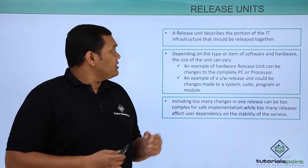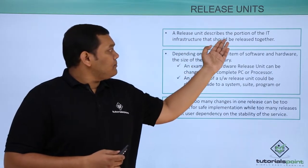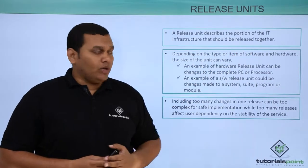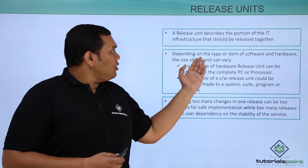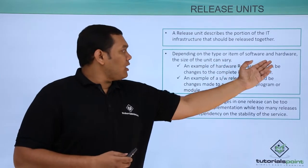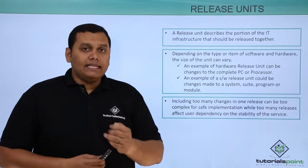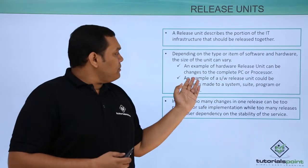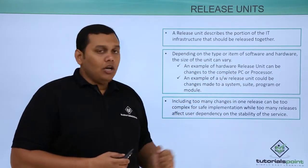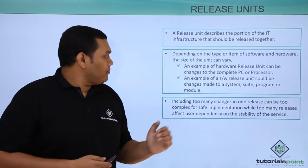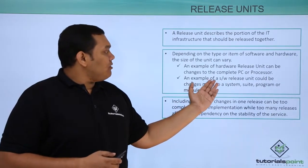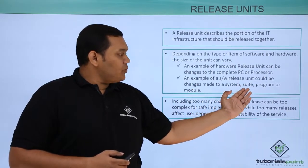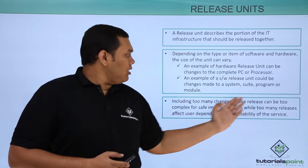Coming to release units. A release unit describes the portion of IT infrastructure that should be released together. Depending on the type or item of software or hardware, the size of the unit can vary. For example, a hardware release unit can be changes to a complete PC or to a processor. A software release unit could be changes made to a system, suite, program, or module.